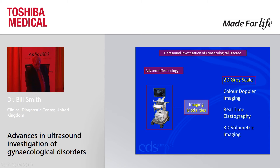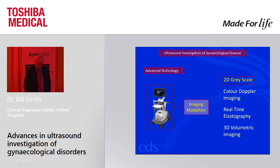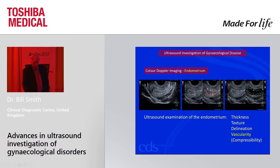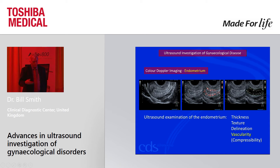If you look at the imaging modalities available to us now, obviously we're all very into 2D grayscale — that's the basis of our imaging modalities. But we don't really use the modalities that are available to us as much as we should do. We'll look at two areas: endometrial pathology and ovarian pathology. Doppler is improving every year — the sensitivity, the resolution of colour Doppler is improving — but we don't use it to its full potential. We have this inherent problem that it is very subjective, and we accept that. But we just don't use it enough to the patient's benefit.